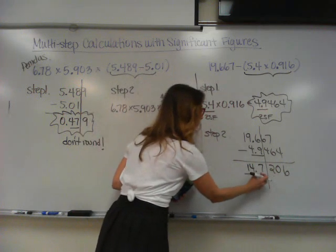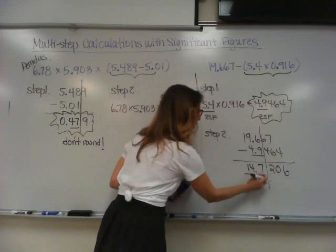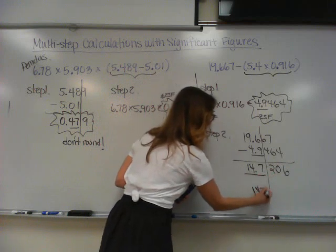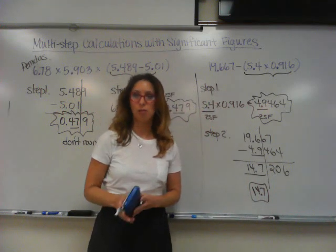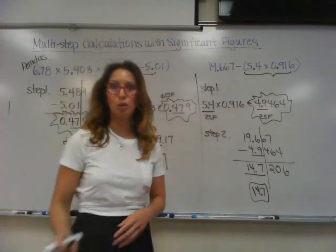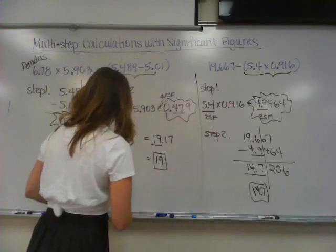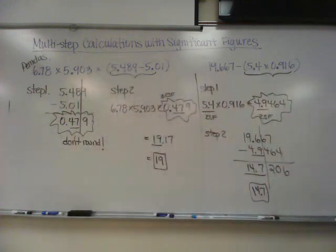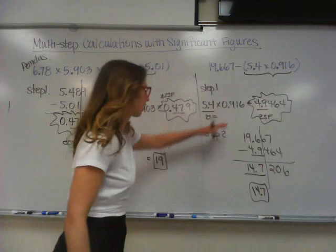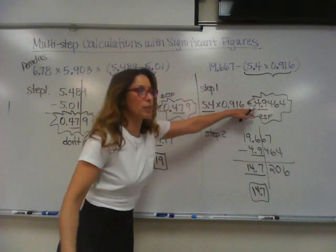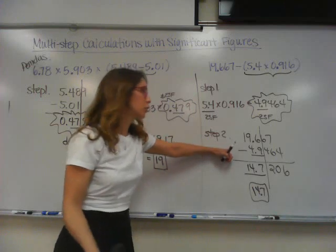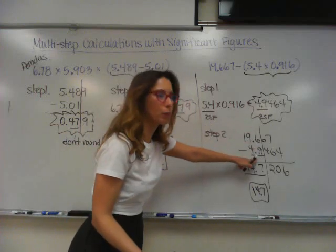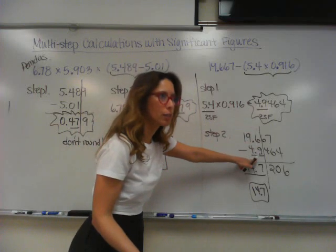Am I going to round up? No, because that's a 2, so it would not round up. Your answer is 14.7. You're done. It depends on which step you're doing — when we multiplied, we counted sig figs. But once I'm into the subtraction step, then I'm following my other rule. You're just remembering how many sig figs you had from that first operation.